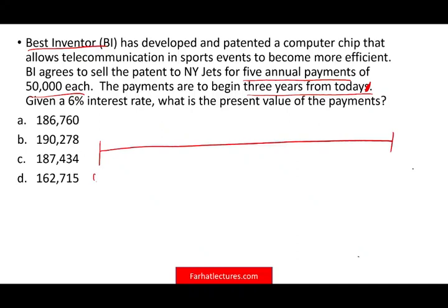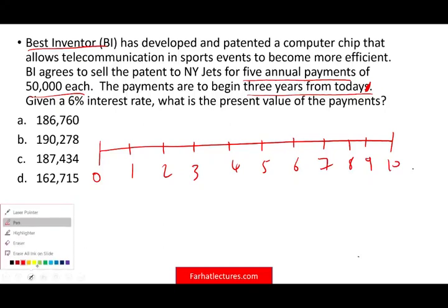Zero is today, then periods one through ten on the timeline. We sold the patent today. The payments are to begin three years from now — one, two, three — so the first payment starts at year three, and we're going to have five payments of $50,000 each: $50,000, $50,000, $50,000, $50,000, and $50,000.